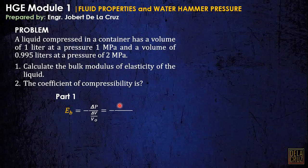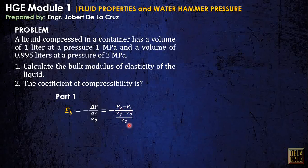We can express this as: the change in pressure is P2 minus P1, while the change in volume is the final volume minus the original volume, over the original volume. That is negative since this is a volumetric strain — we are compressing the water. So this value will be negative, and negative over negative is positive.